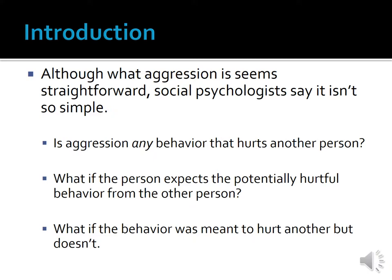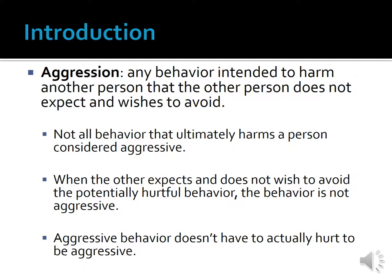Also, what if a person intended to hurt someone but actually didn't? For example, is it considered aggressive behavior if a person throws a punch at somebody but his punch misses the target? Even though the behavior didn't end up hurting anybody, most people would still consider this aggressive behavior. With these considerations in mind, social psychologists have come up with the following definition of aggression: aggression is any behavior intended to harm another person that the other person does not expect and wishes to avoid. According to this definition of aggression, not all behavior that ultimately harms another person is considered aggressive.